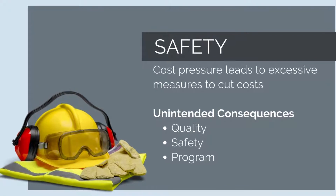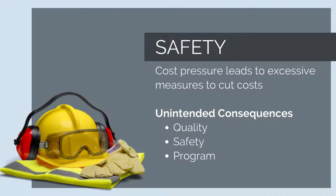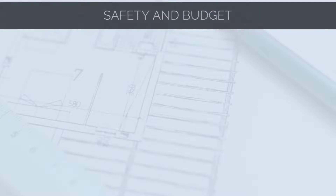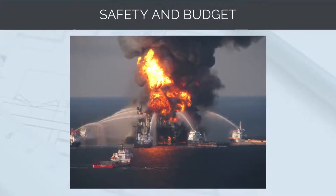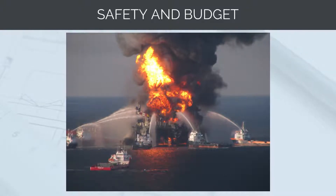When projects are under cost pressure, it leads to excessive measures to cut costs. This can lead to unintended consequences impacting quality, safety and program. Maybe the commercial team will reject a geotech inspection you needed, or you won't be allowed to get additional temporary fencing to secure the site. When projects are under pressure, every expenditure is scrutinised and sometimes poor decisions can be made to save money. A real-life case study of this is the infamous Deepwater Horizon oil spill.